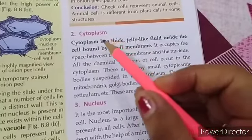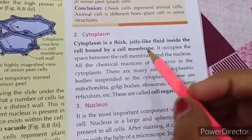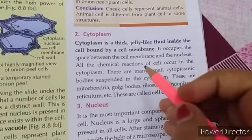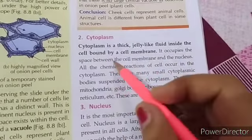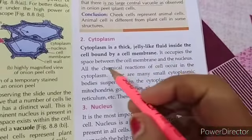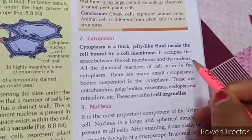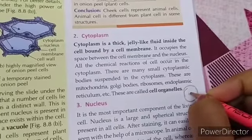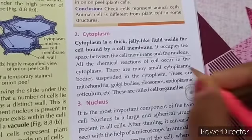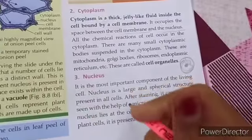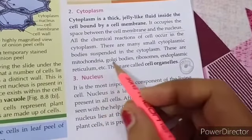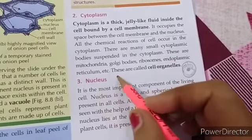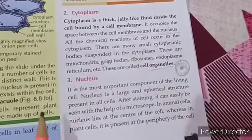The second part of the cell is cytoplasm. Cytoplasm is a fluid present inside the cell membrane. It occupies the space between the cell membrane and the nucleus. Cell organelles such as mitochondria, Golgi bodies, ribosomes, endoplasmic reticulum, etc., are present in the cytoplasm, which we will study further.